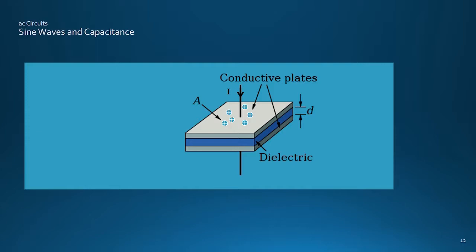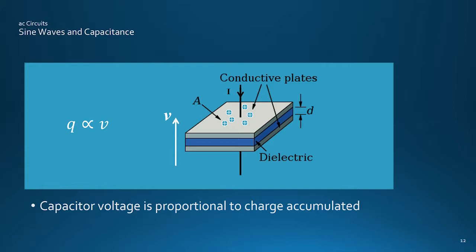A capacitor won't pass a current flowing continuously in one direction, as the insulating dielectric blocks the flow. But when an external source tries to push a current, charges will build up on the plates, and as they build up, these positive charges, or lack of electrons on one side, and negative charges, or electrons on the other, set up a voltage which opposes the inward flow in proportion to the number of charges that have accumulated.